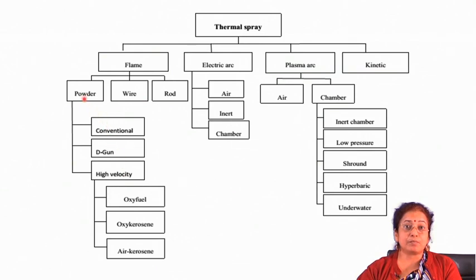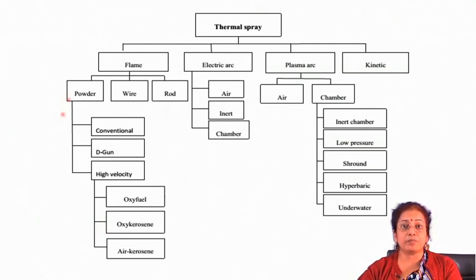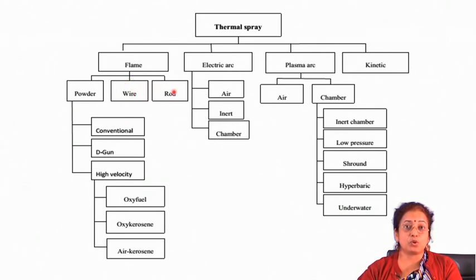Under the high velocity category there are further sub-classifications like oxy-fuel, oxy-kerosene, or air-kerosene, depending on the fuel used for heat generation. Powder spraying may be conventional or detonation gun, depending on how the oxy-acetylene fuel is ignited. High velocity means the velocity is above sonic velocity. If the precursor is in wire or rod form, it must be under the conventional category, since detonation gun or high velocity processes cannot use wire or rod as precursor material.